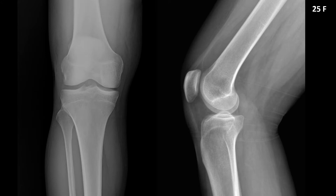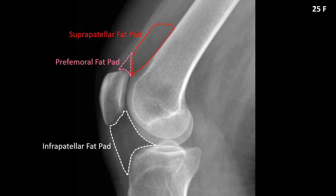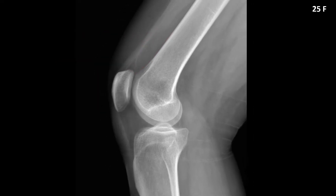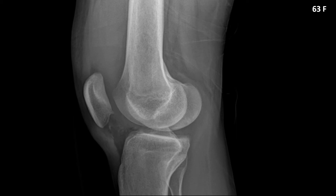A joint effusion is swelling inside of the joint capsule, most commonly seen in the suprapatellar joint region in the knee, and that's best visualized on the lateral view. The three fat pads seen in the anterior knee are the suprapatellar, pre-femoral, and infrapatellar fat pads. The most important radiographically is the suprapatellar fat pad. Let's take one last look at this suprapatellar region in a normal knee before moving on to some abnormal examples.